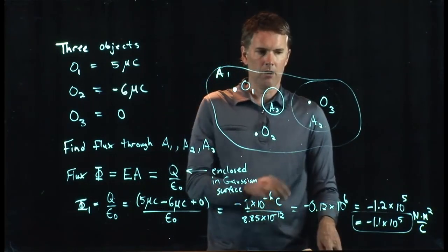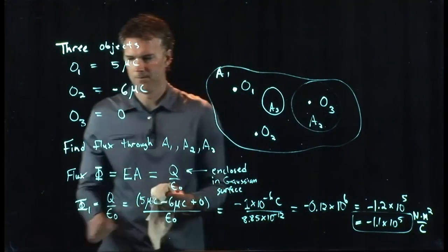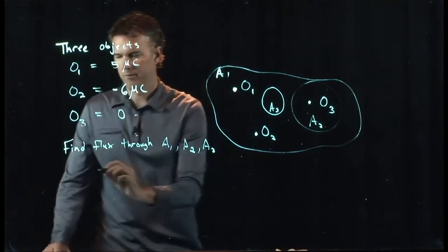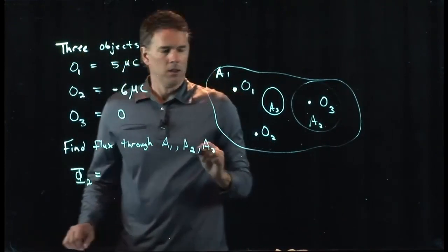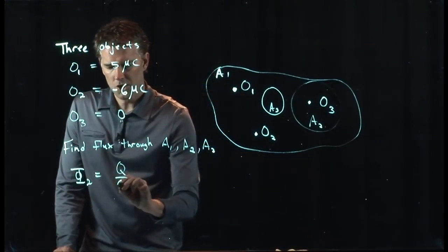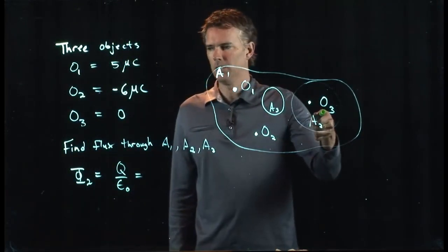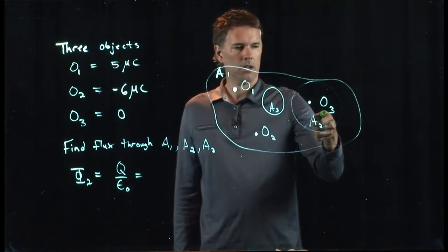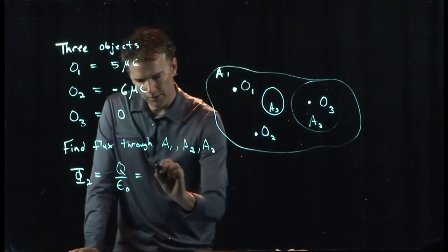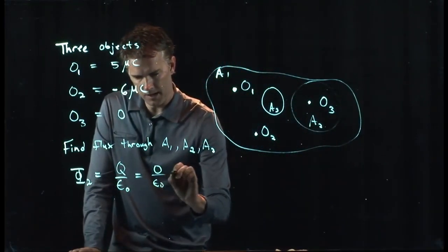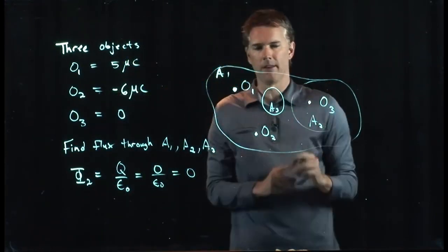Let's think about flux phi 2 through A2. Phi 2 is going to be the Q enclosed in its shell divided by epsilon naught. How much Q is enclosed in A2? It's only O3, but O3 has zero charge on it. So this is zero over epsilon naught, and so that is zero. There's no flux coming out of this one.